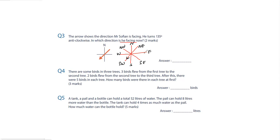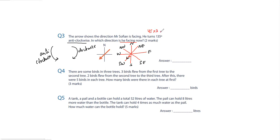He's facing this direction and making a 135-degree anticlockwise turn. Clockwise is the direction a clock moves; anticlockwise is the opposite. Each interval between compass points is 45 degrees, and 45 times 3 equals 135 degrees, so we move three intervals anticlockwise: one, two, three. He is now facing East.